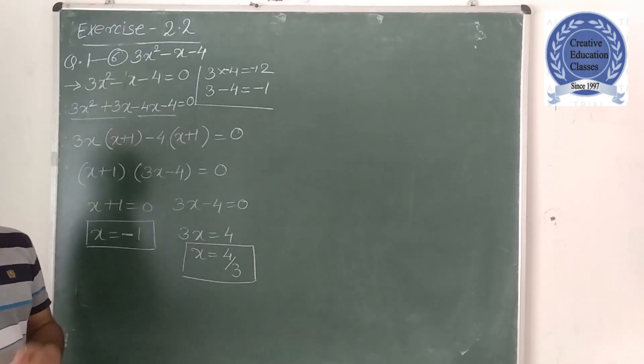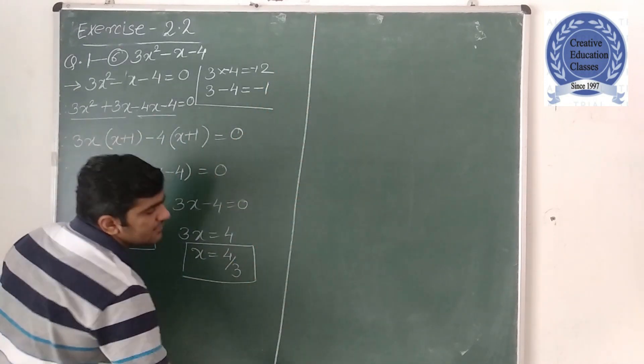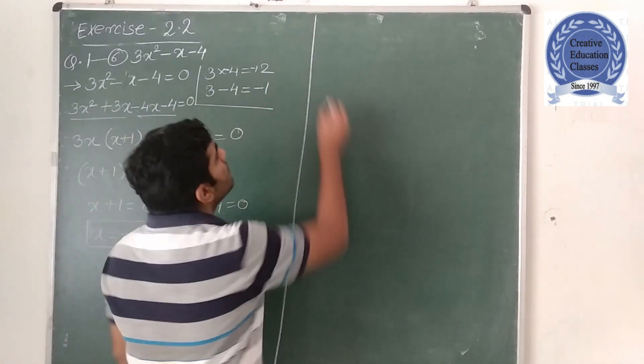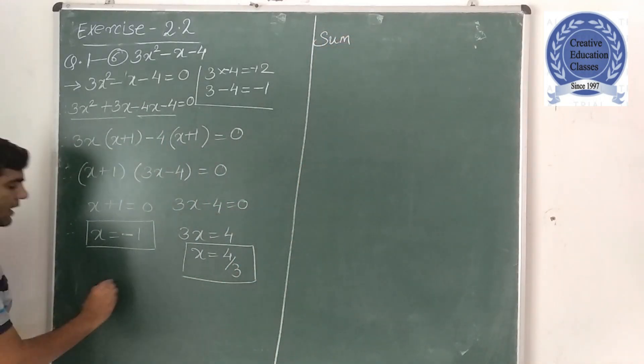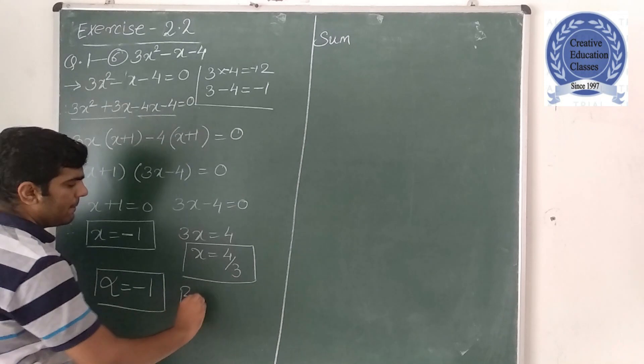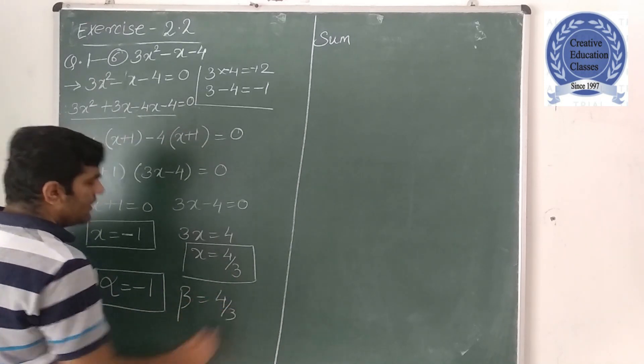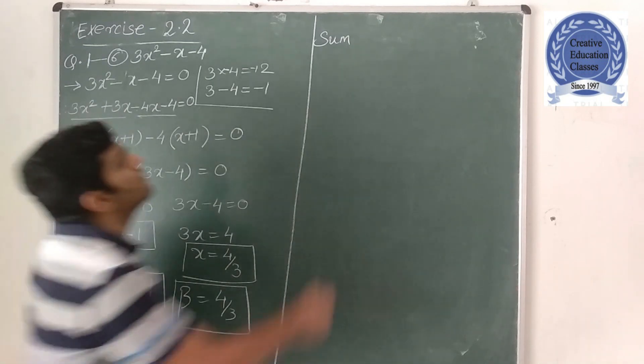Now what do we do? We will do verification. So we will do verification. Sum of zeros and product of zeros. So we will do sum of zeros. We will call this alpha and we will call this beta.